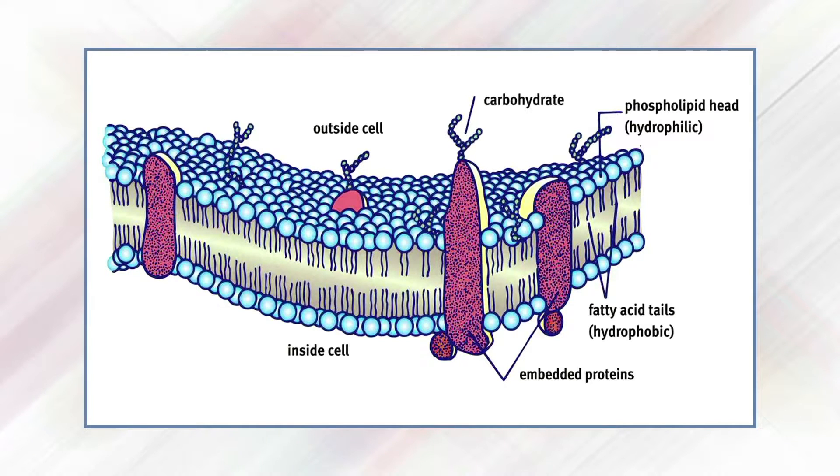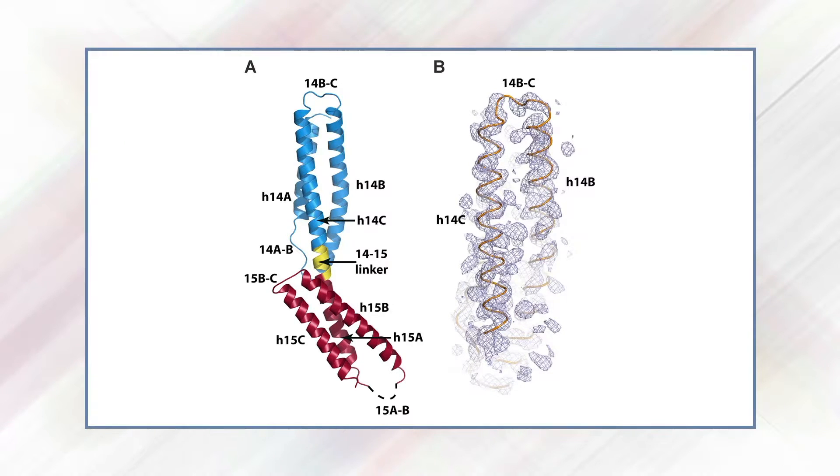In the fluid mosaic model, the membrane is a mosaic of proteins embedded in a fluid phospholipid bilayer, with the hydrophilic portions of phospholipids and proteins maximally exposed to the aqueous interface — a feature that ensures membrane stability. The presence of cis double bonds introduces a kink into the fatty acid chain, preventing the phospholipid molecules from being packed together too tightly and thus contributing to membrane fluidity. Both the membrane lipids and the embedded proteins are free to move.